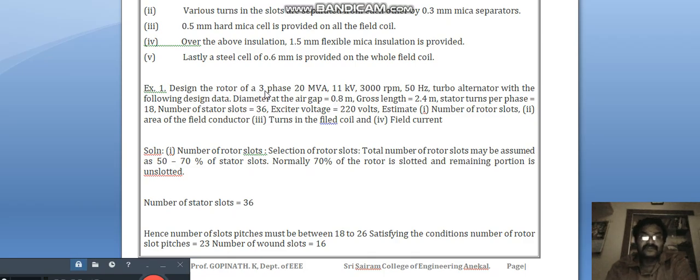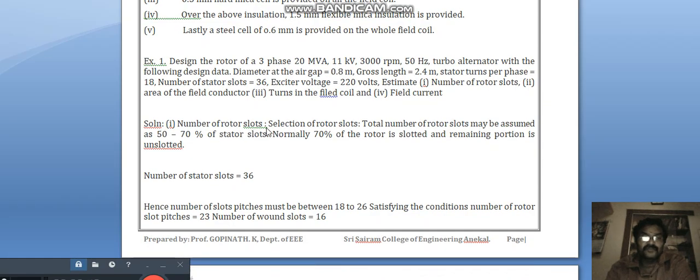Example: design the rotor of three-phase turbo alternator with the following data. Solution: number of rotor slots, selection of rotor slots. Total number of rotor slots may be assumed 50 to 70% of stator slots. Normally, 70% of the rotor slots is slotted, remaining portion is unslotted.